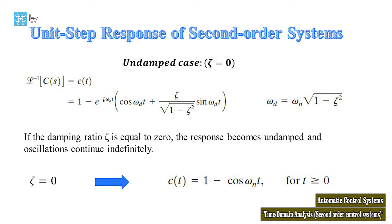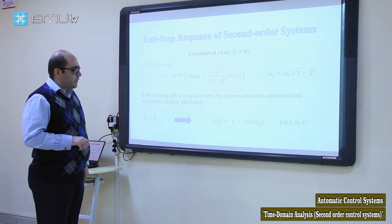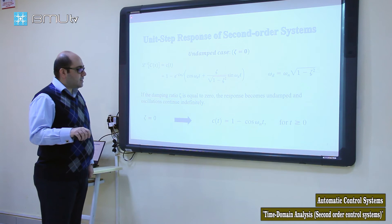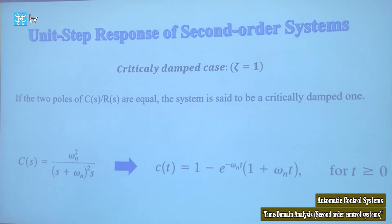For the undamped case, if we substitute zeta = 0 into the response equation, we find that the response equals 1 − cos(ωₙt). Looking at this equation, the response becomes undamped and oscillations continue indefinitely because of the cosine term.